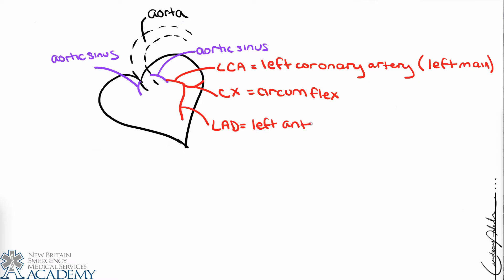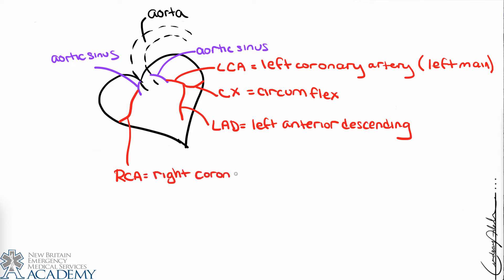The LCA will branch into two other major coronary arteries: the circumflex and the left anterior descending (LAD). On the opposite side, the aortic sinus on the right gives rise to the right coronary artery (RCA). The RCA branches but doesn't branch into any other major arteries we need to consider at this point.